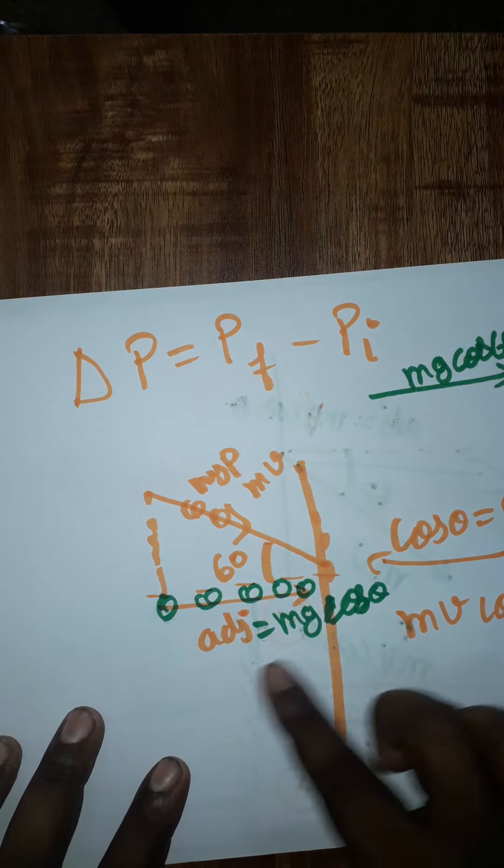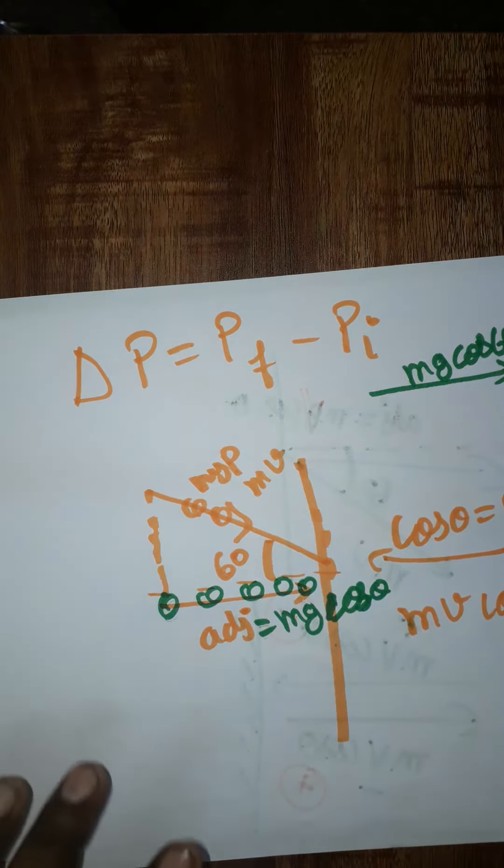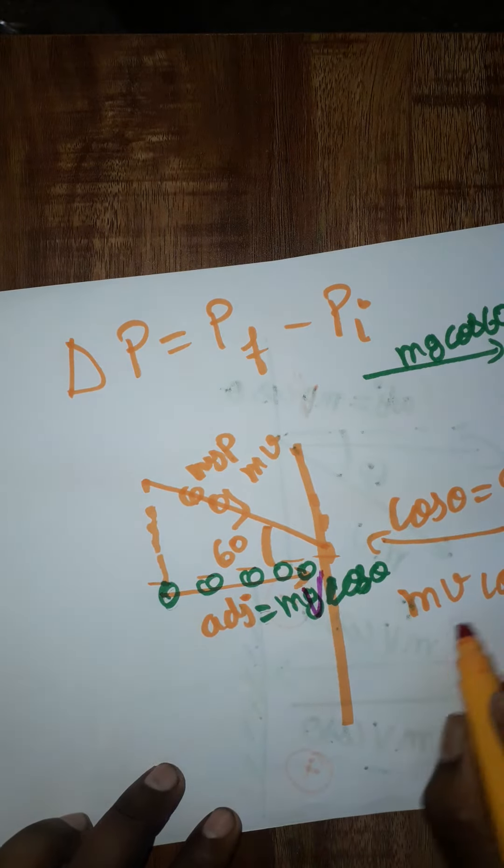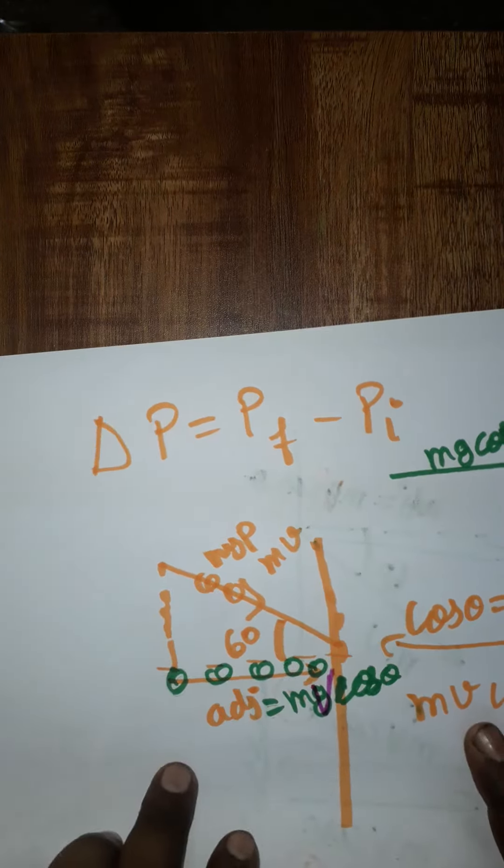I will get mv cos θ, where v is the velocity and angle will be 60 degrees. Also, change in momentum is momentum final minus momentum initial when the ball reflects from the wall.